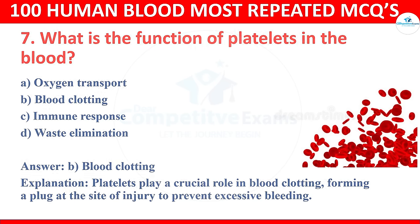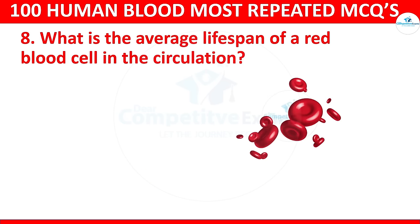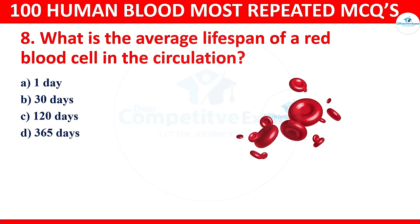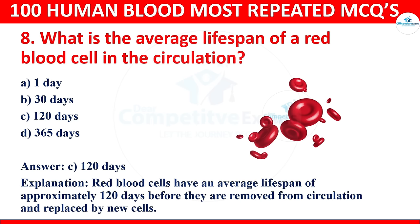Question 8: What is the average lifespan of a red blood cell in circulation? The options are 1 day, 30 days, 120 days, or 365 days. The correct answer is 120 days. Red blood cells have an average lifespan of approximately 120 days before they are removed from circulation and replaced by new cells.